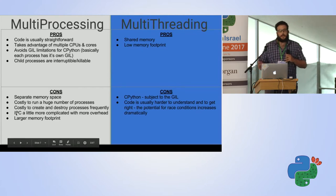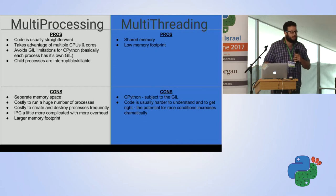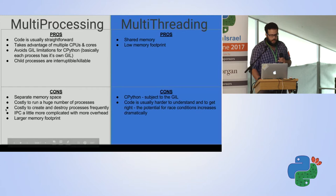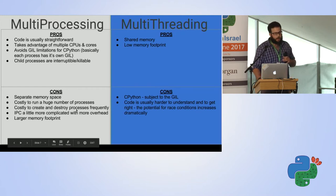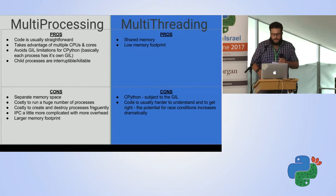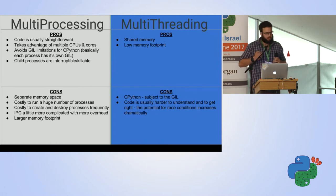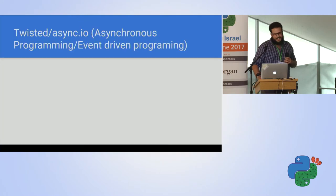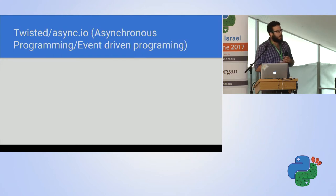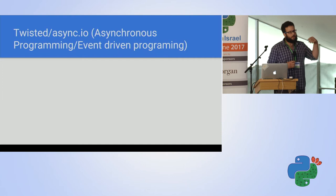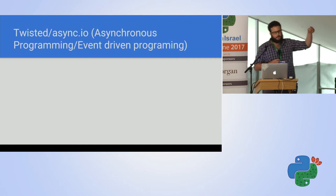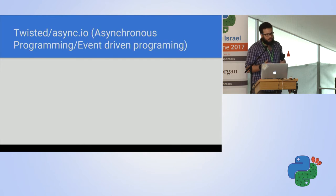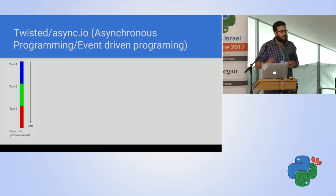There are pros and cons to each. Some people debate inter-process communication. But one thing no one debates: it is costly to create and destroy processes frequently. There's another, not-so-simple solution - Twisted or asyncio: asynchronous programming or event-driven programming. There was a great talk about asyncio right after this one.